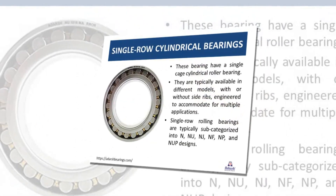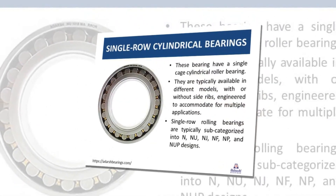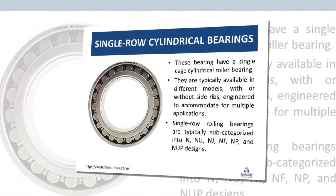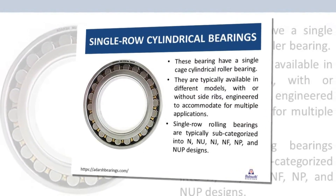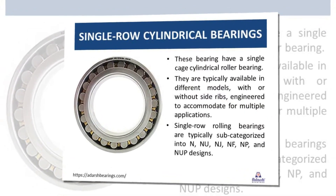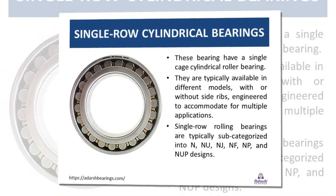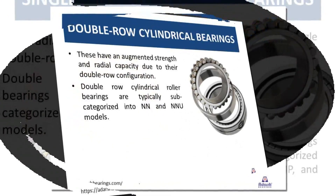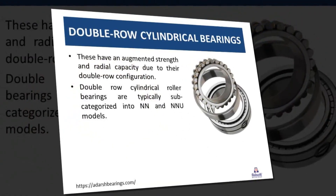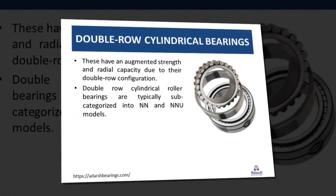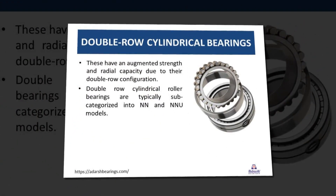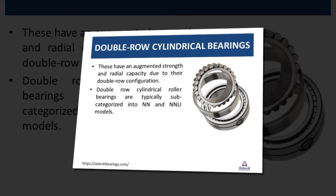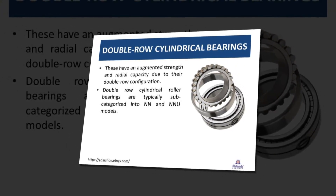Single row cylindrical bearings have a single cage cylindrical roller bearing; they are available in different models with or without outside ribs. Double row cylindrical bearings have augmented strength and radial capacity due to their double row configuration.